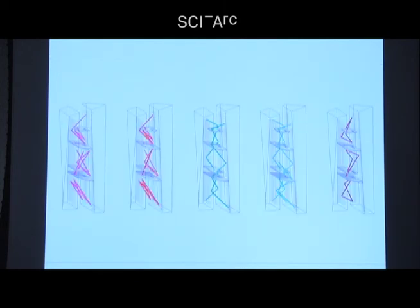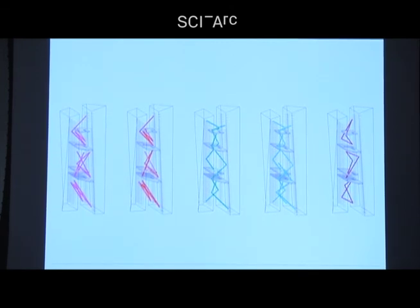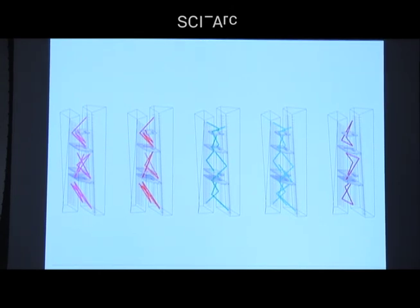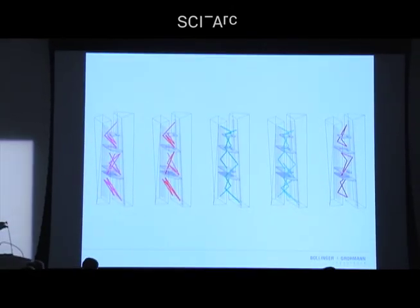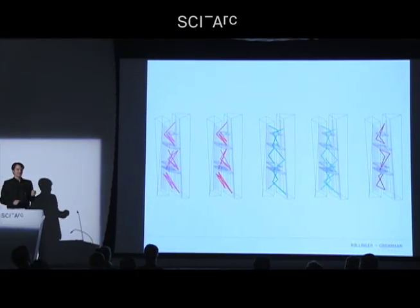Here you see different steps in the geometry. Funnily, we thought we found a solution which was too good. So we had to go back a little bit because the forces were so big in the diagonals, we couldn't get them into the concrete anymore. So we had to find a solution which matched the concrete forces and the stiffening.